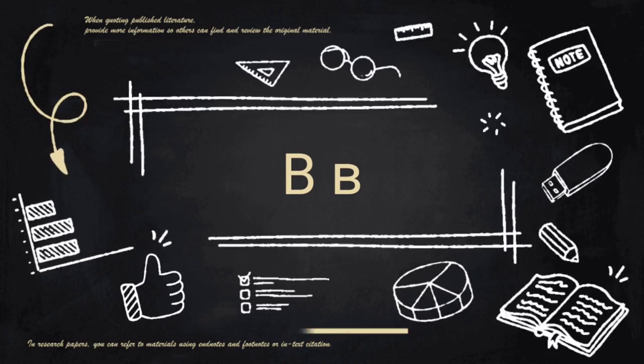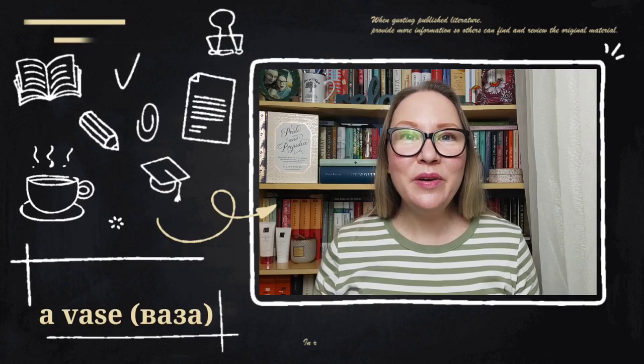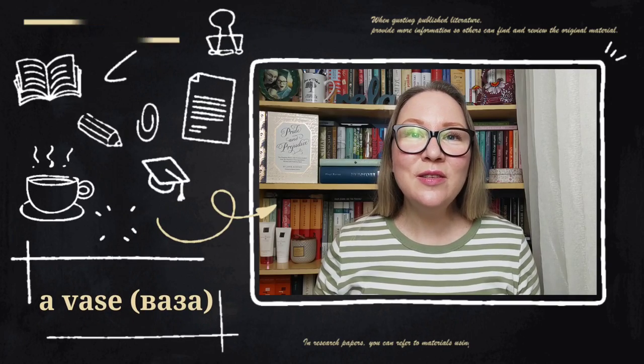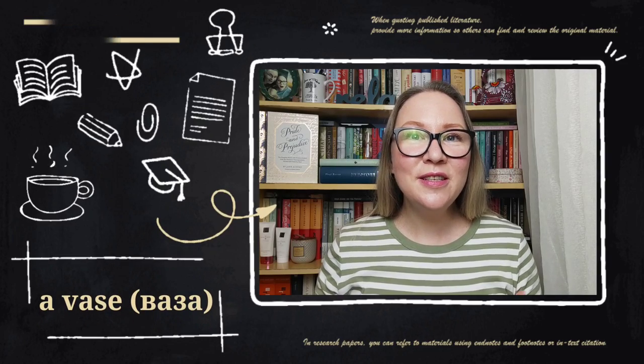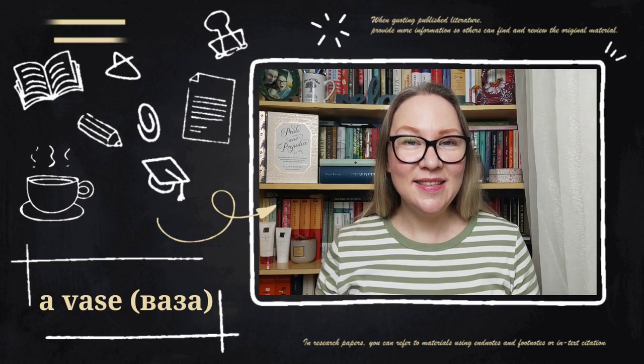The third letter is В. At first you might confuse it with Б — «банан», a banana — but with some practice you will remember it's pronounced as the first sound in «vase».